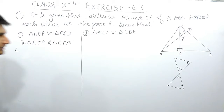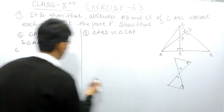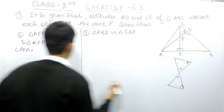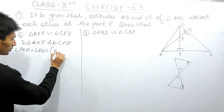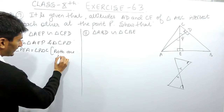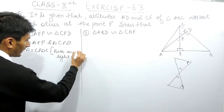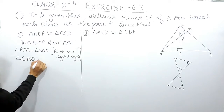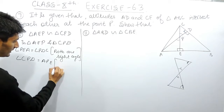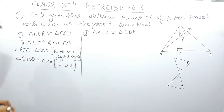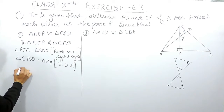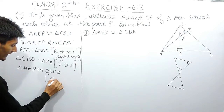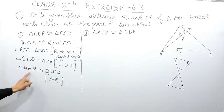In triangle AEP and triangle CPD: angle PEA equals angle PDC — both are right angles, that is 90 degrees. And angle CPD equals angle APE — these are vertically opposite angles, so these two angles are equal. Therefore, triangle AEP is similar to triangle CPD by the Angle-Angle similarity property.